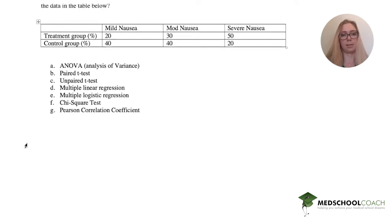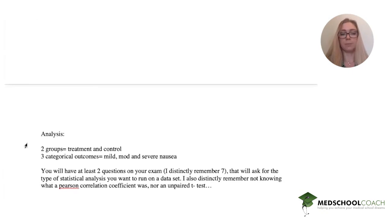So let's analyze this question. We know that you have two groups. You have a treatment group and a control group. But, and you also have three outcomes. You have mild, moderate, and severe nausea, but those are categorical outcomes. And now it's your key word here. They're categorical outcomes.